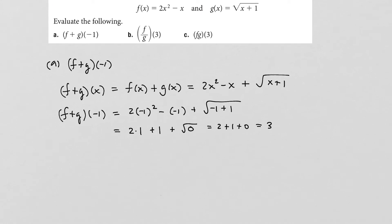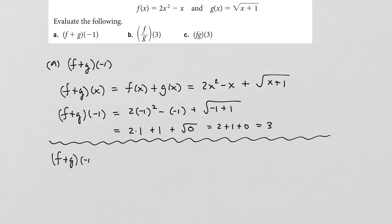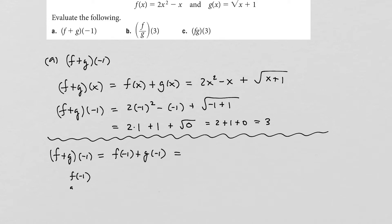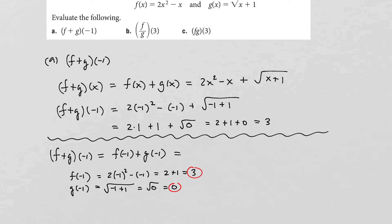Another way to find (f+g)(-1) is to use the definition directly: (f+g)(-1) = f(-1) + g(-1). f(-1) = 2(-1)² - (-1) = 2 + 1 = 3. And g(-1) = √(-1+1) = √0 = 0. Then 3 + 0 = 3. It's essentially the same result via two different approaches.